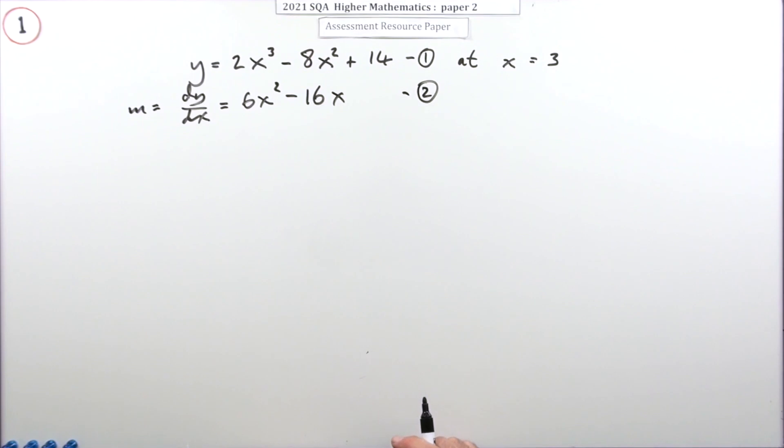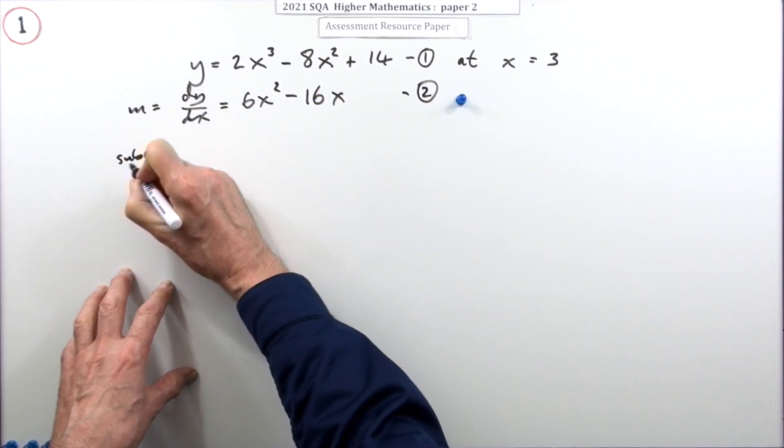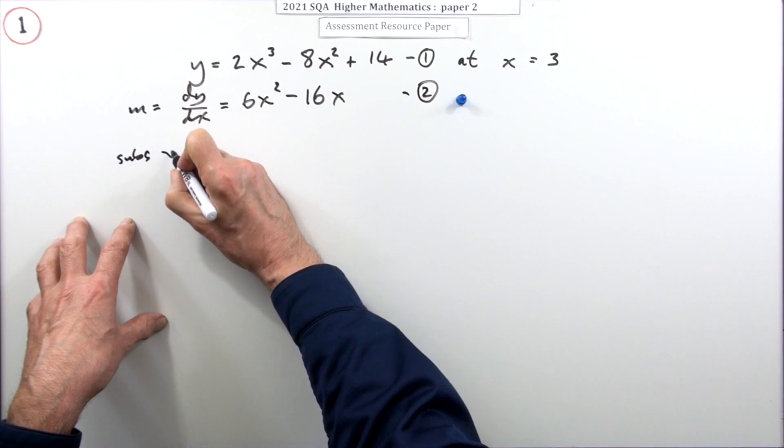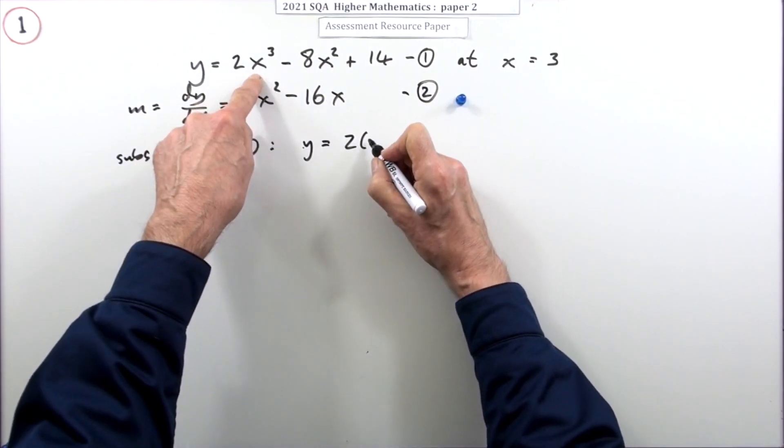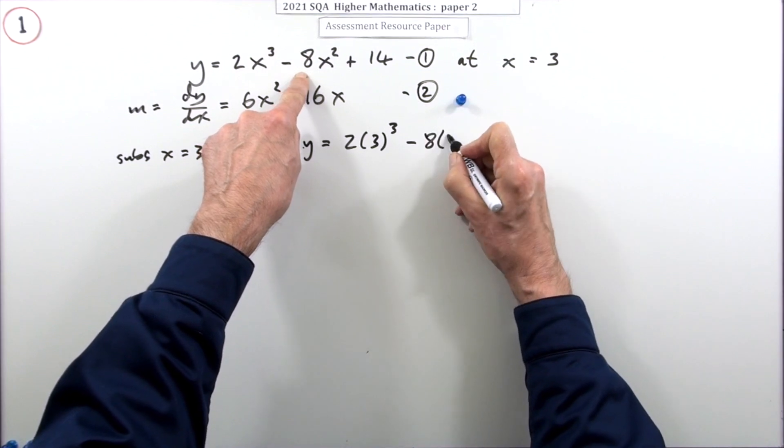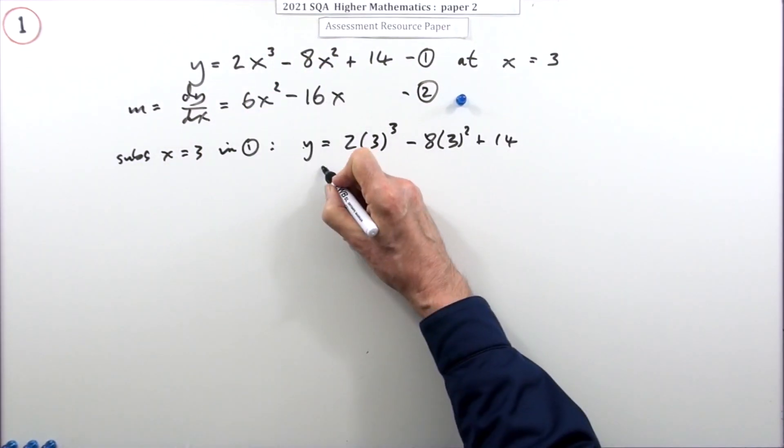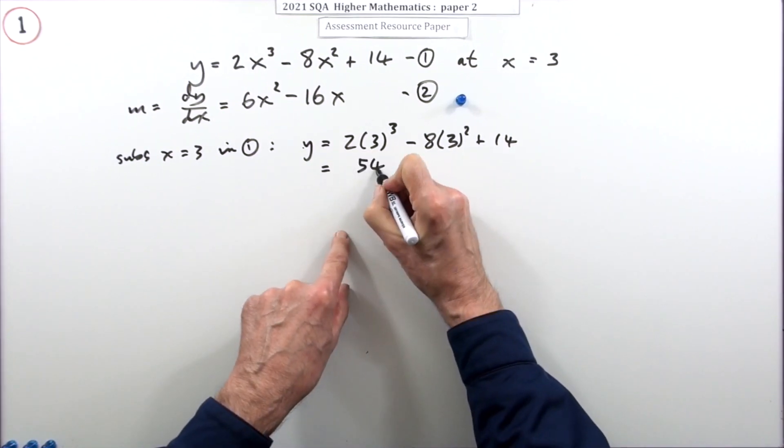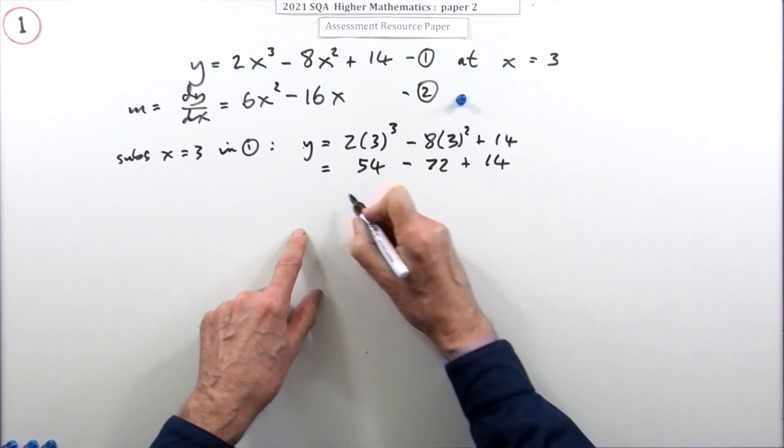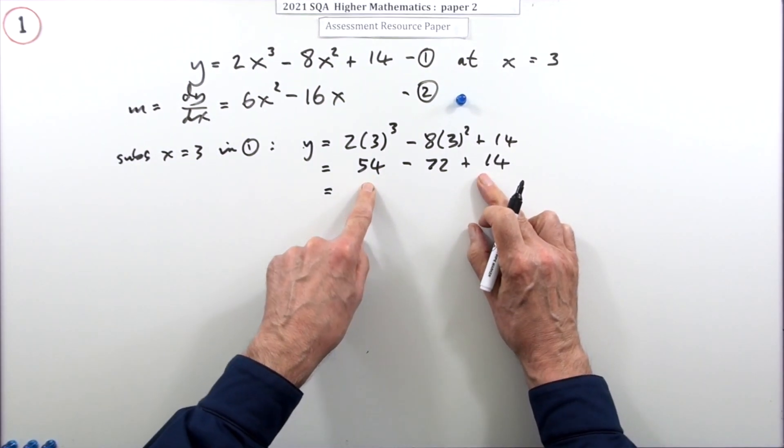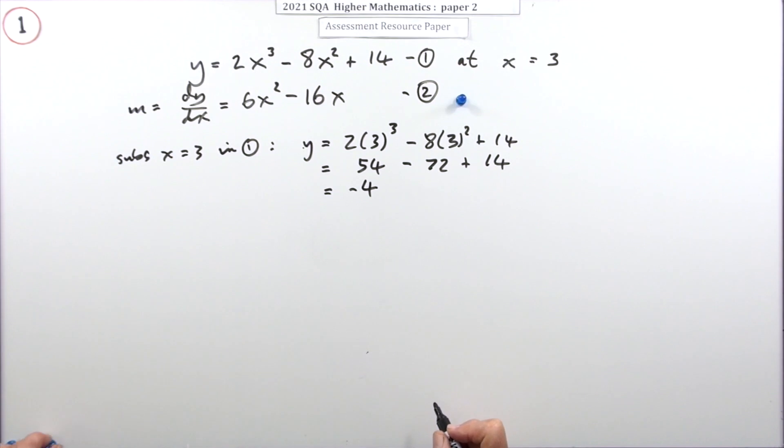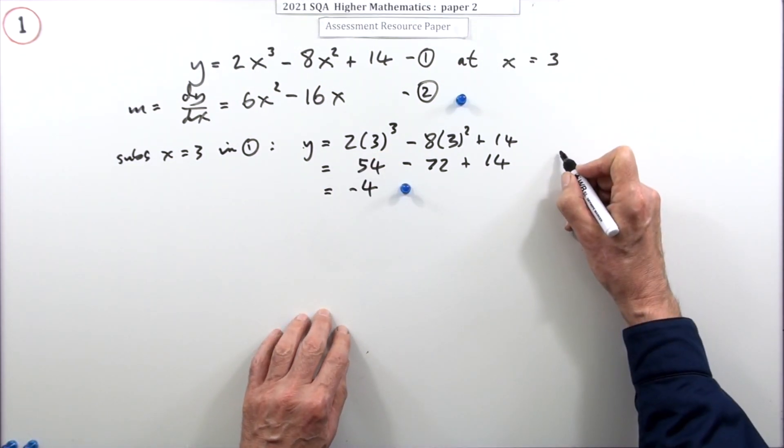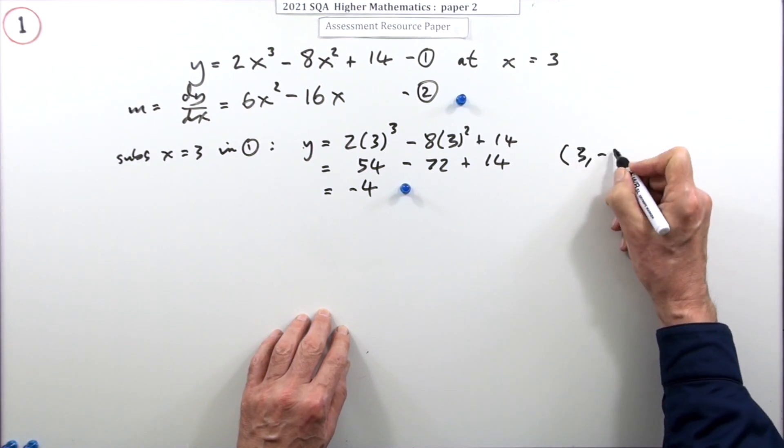I'm going to use this one to get the coordinate and this one to get the gradient. Having differentiated, you get the first mark. Now find the two things. I'm going to substitute x equals three in equation one because that will give me the y coordinate. So that will be putting the three in place of x: 2 times 3³ minus 8 times 3² plus 14. That's 2 times 27 is 54, that's 9 times 72 plus the 14. Well that comes to 68, so 68 means I'm four short, minus four. So getting the y coordinate was a mark. That means now I've got the point - the point three, negative four.